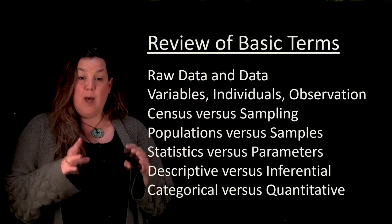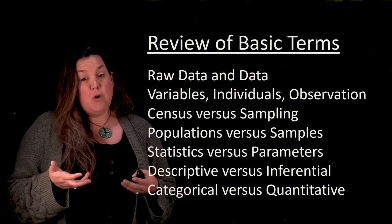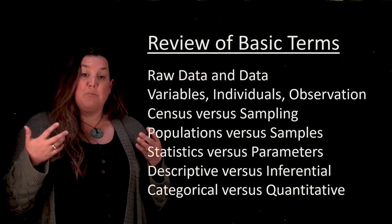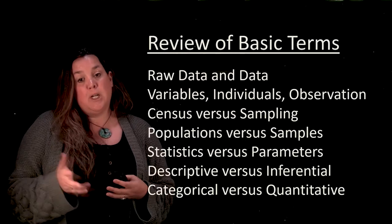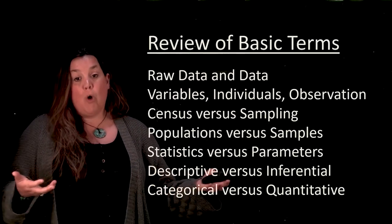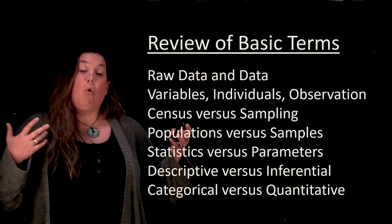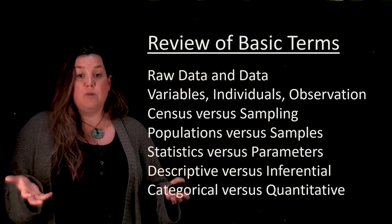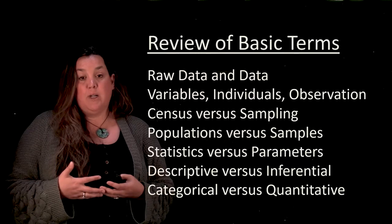When you create a dataset, we talked about how you would have variables, individuals, and observations. Variables are going to be represented in the columns — those are the pieces of information that you want. Individuals are represented in the rows, and a single row we called an observation, dedicated to one unique individual, or field, or tree, whatever it is.